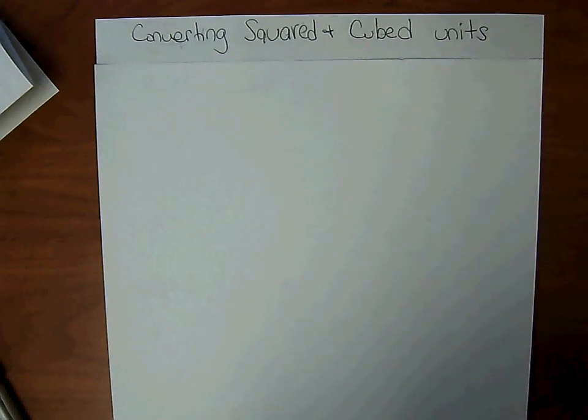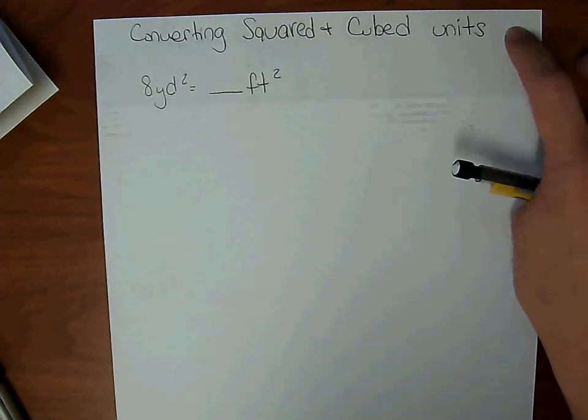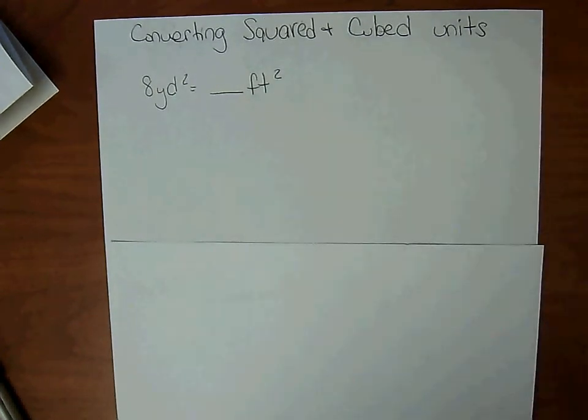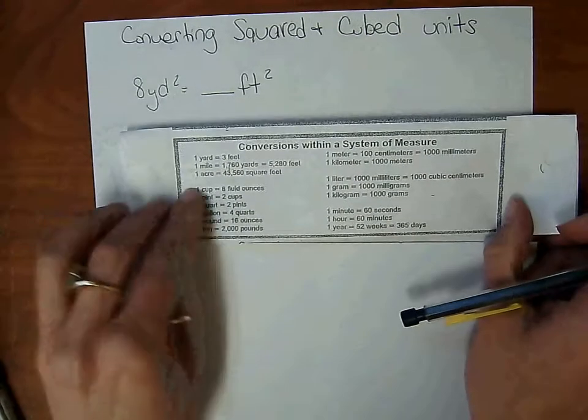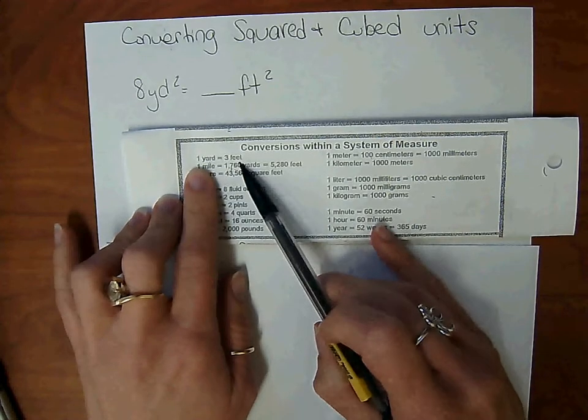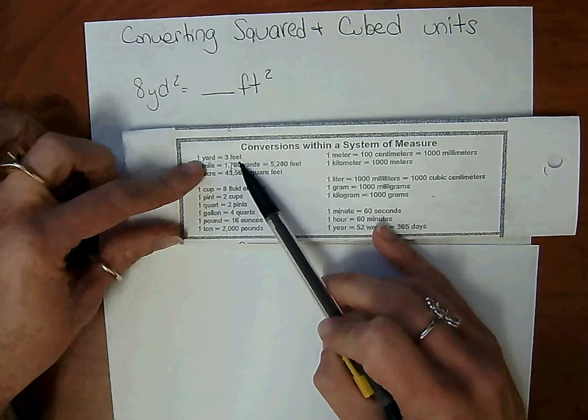Converting squared and cubed units. If we would like to convert something as 8 square yards equals how many square feet, we can't just look at a conversion table like we did when our units were not squared. We can't just look up here and say 1 yard equals 3 feet and use that information. It doesn't work that way. However, we are going to use that to help us.